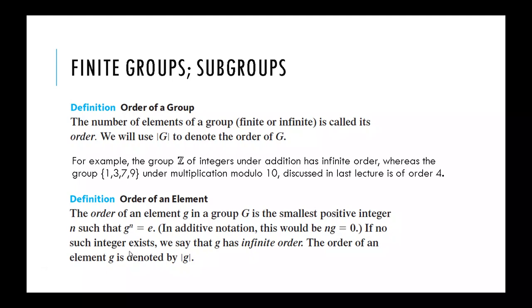If no such integer exists, we would say that the order of an element g is infinite order. We denote the order of an element g by the similar notation that we have used for the order of a group. The only difference here is the small g and capital G, because groups are denoted by capital letters and their elements are denoted by small letters.